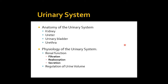As far as the urinary system goes, hopefully a lot of this will be review from anatomy and physiology. When we look at the urinary system, we're looking at the kidneys, the ureters, the urinary bladder, and the urethra — that is the direction of flow. In the second half of this lecture, we'll look in detail at the physiology: filtration, reabsorption, secretion, and how the body regulates urine volume.